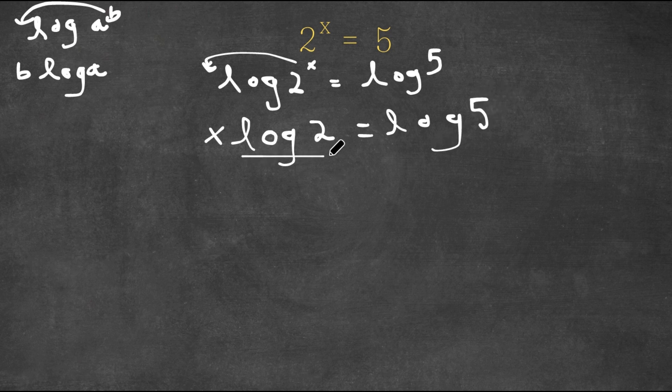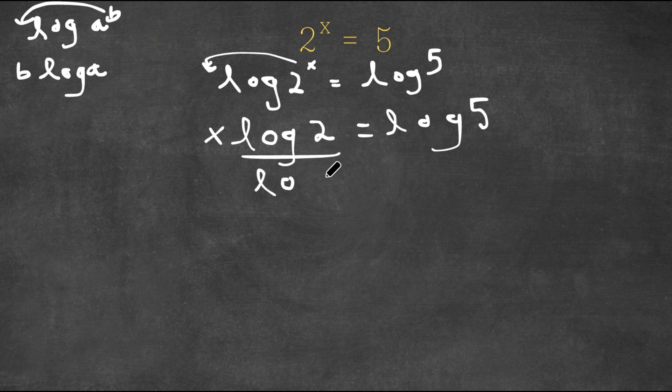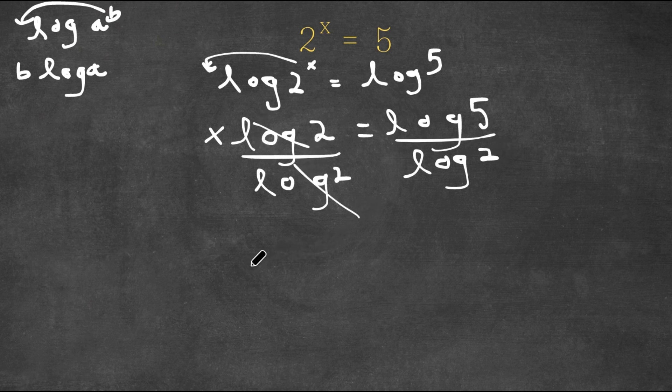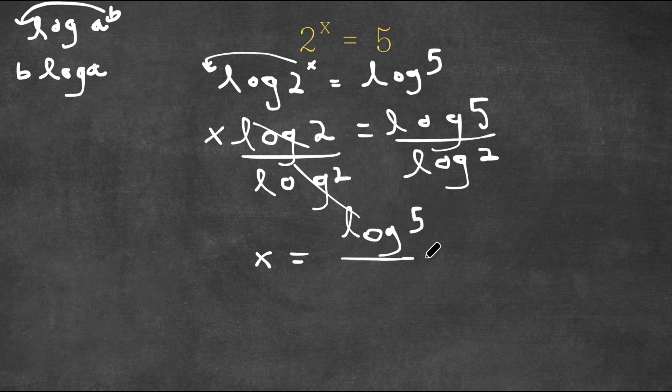Now I'm going to divide both sides by log 2. So then these two cancel out and we're left with x is equal to log 5 over log 2.